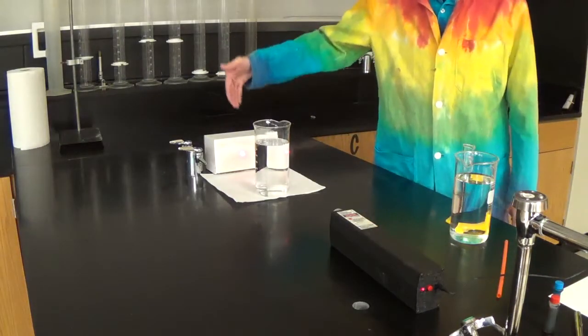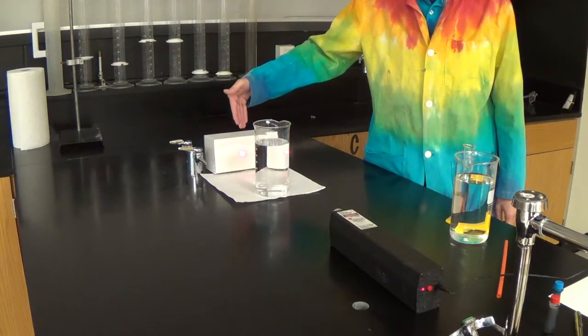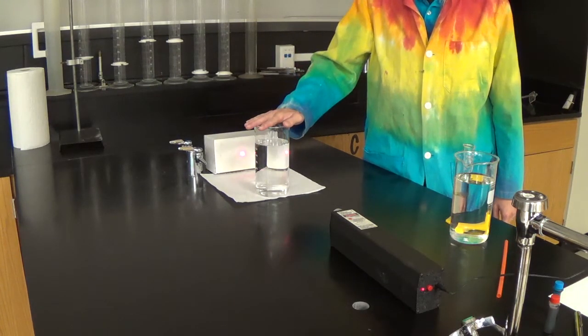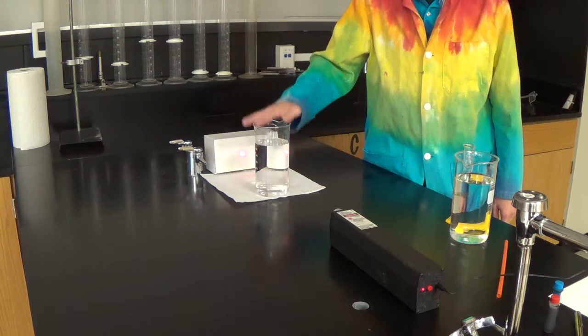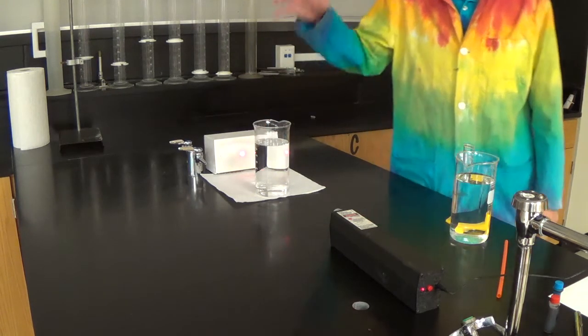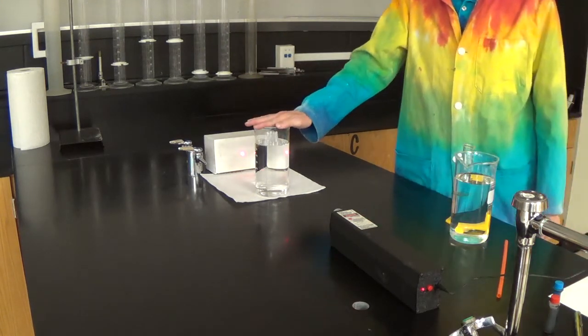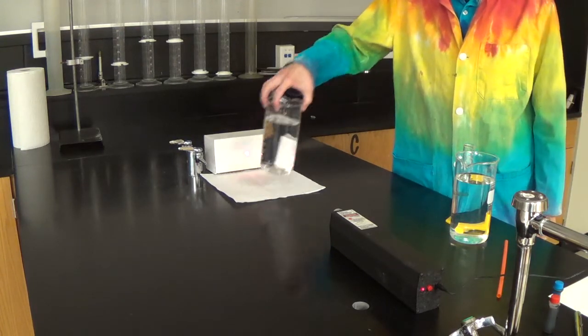So we're getting 100% transmittance here, which means our blank has zero absorption. Once we have blanked our colorimeter, we're ready to insert our sample.